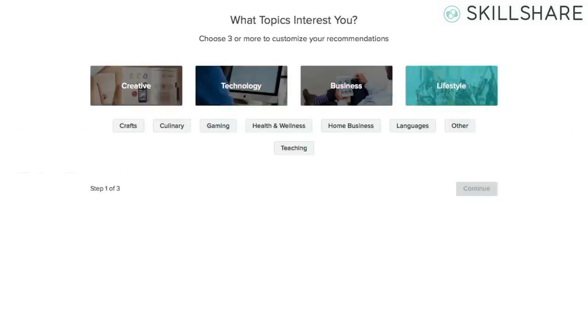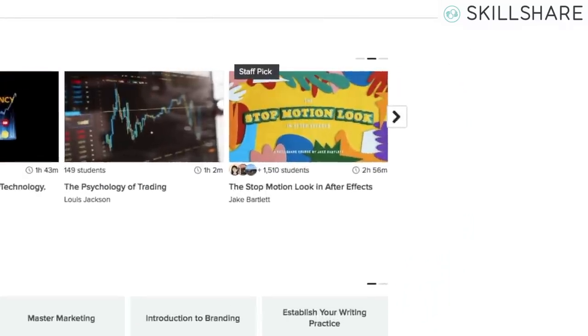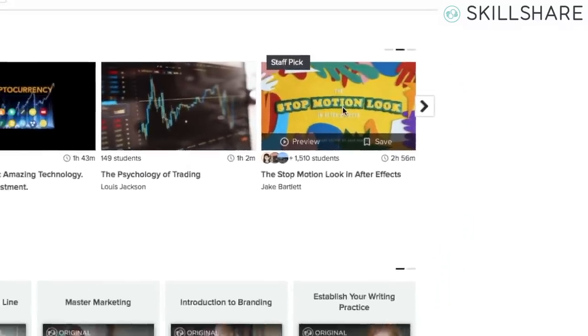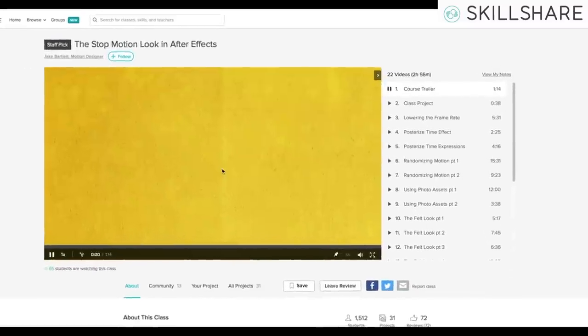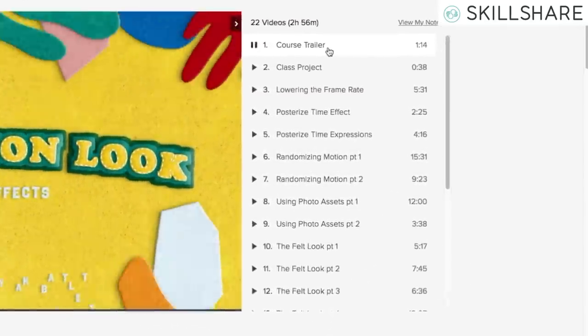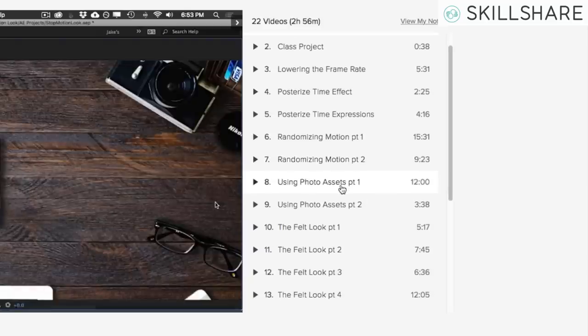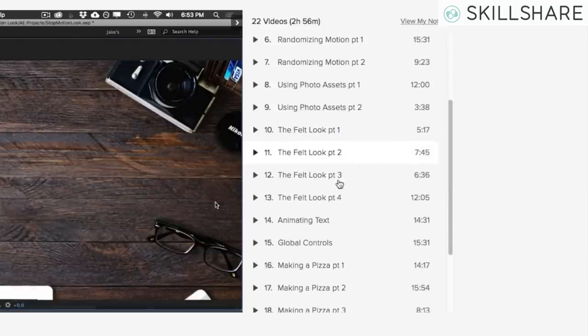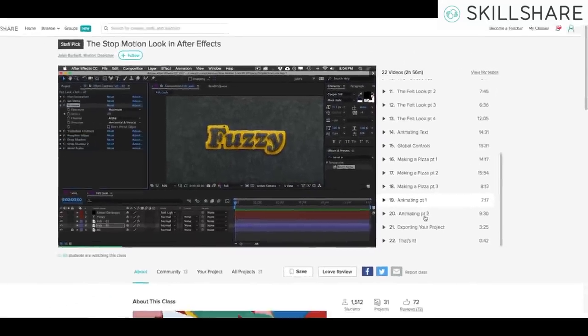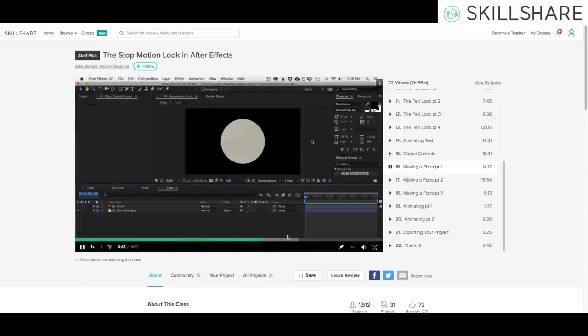So first thing you're going to do when you sign up is choose three or more topics that interest you. With that, they'll have a list of recommended classes. I picked this one just so we can see what it's like, and so I can show you one of the things I've learned is my favorite thing about Skillshare. Each course has a list of chapters or steps in the process of learning what you're going to do. This is nice for me because after learning something, I always have to go back and relearn it, but usually not the whole thing. There's usually just individual things I've forgotten, and this makes it super easy to find and relearn.